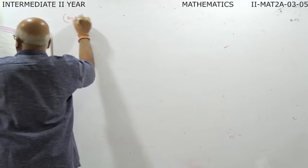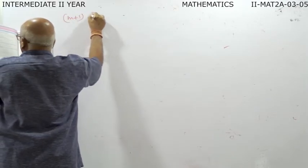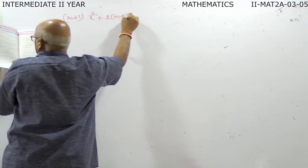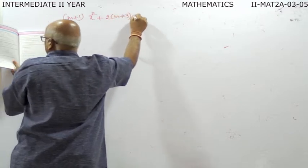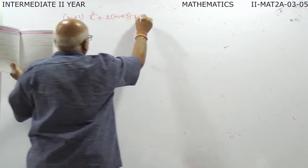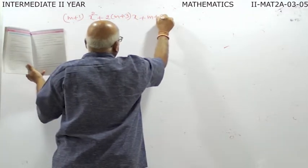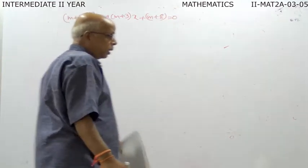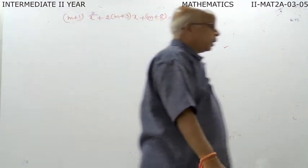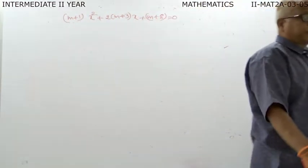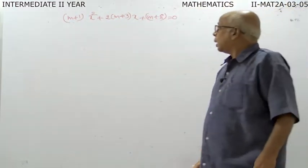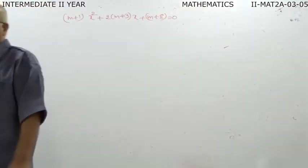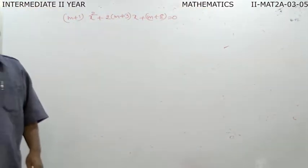The equation is: m plus 1 into x-squared plus 2 into m plus 3 into x plus m plus 8 equal to zero.